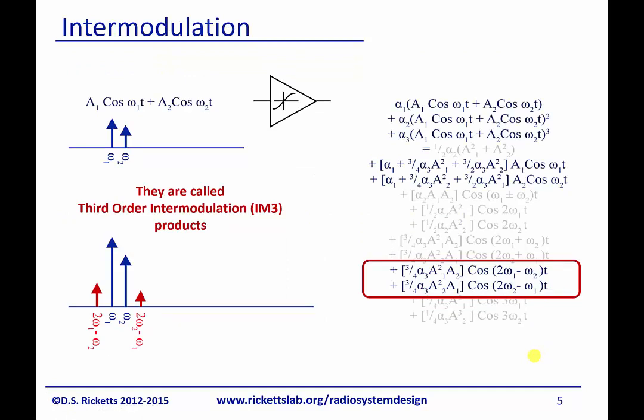So what we've done is we've shown, as we've seen before, two inputs to a system. A1 cosine omega 1 plus A2 cosine omega 2. And we put these through a nonlinear amplifier that has a Taylor series.